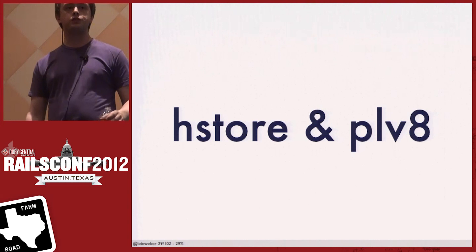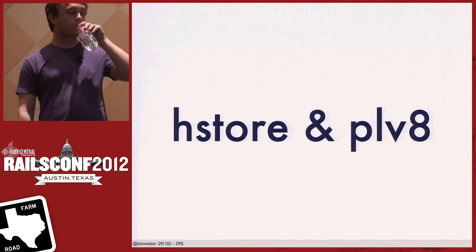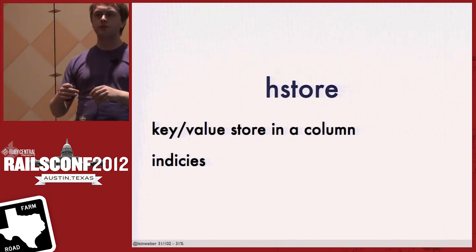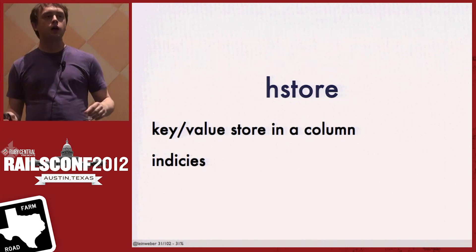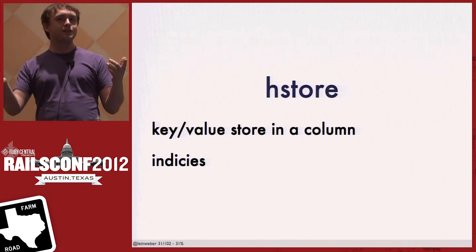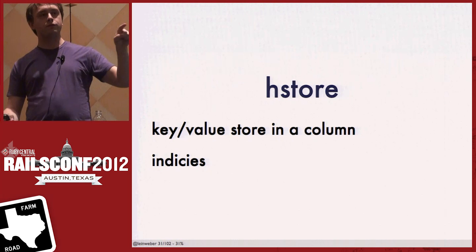I don't miss documents anymore because I found a way to bring document database features into Postgres — with two features. One has been around a little while and one is fairly new: HStore and PLV8. So first, HStore. HStore is a key-value data type that you have in one of your columns. Fantastically, you can also have indexes on the key-value stuff you store. I'm curious: how many people have in their applications a serialized data column they can't actually query on? So I'm not crazy — we like to serialize stuff — but if you use HStore, you can query on it.